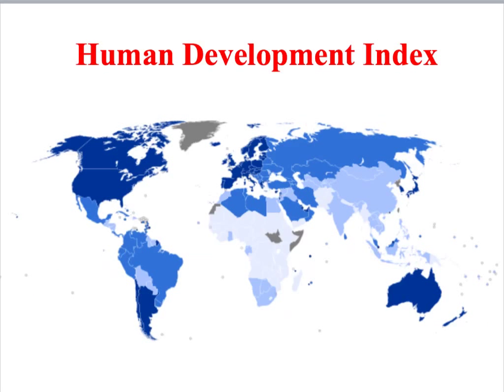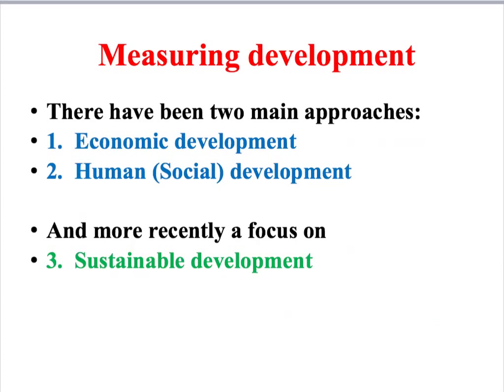In this map of the world, countries are colour-coded by their rank on the Human Development Index, with darker blue indicating higher-ranked countries and paler colours indicating lower-ranked ones. In this screencast we've looked at economic development through GDP, and at human development by focusing on education, health, and the position of women. The next screencast will focus on sustainable development and its important environmental indicators.